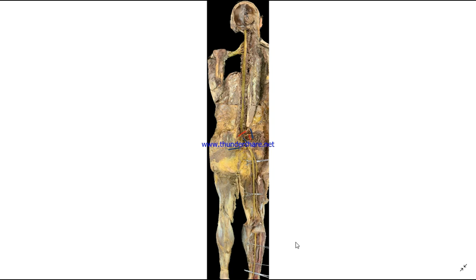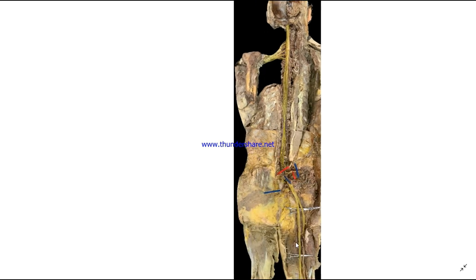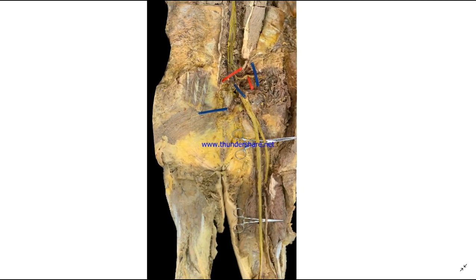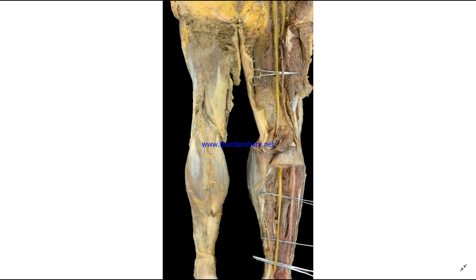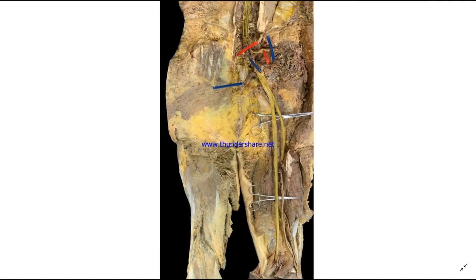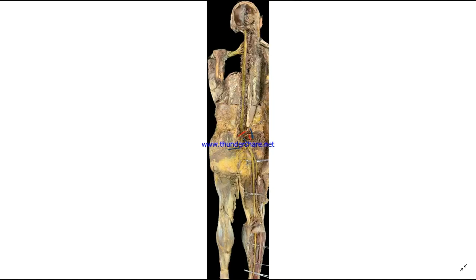Following on with the previous dissection, we're now looking at the cadaver in the full posterior view. I've cleaned up the dissection so we can see the sciatic nerve splitting, giving the tibial and fibular branches, then following down the posterior region to the lower border of the thigh — highlighted here in yellow so you can see the transition of the nerve. Overall, this is a nice demonstration of the entirety of the central nervous system — the brain and spinal cord — and then the peripheral nervous system, the PNS, formed by these various plexi, including the thoracic and abdominal plexi and the rest of the extremities.